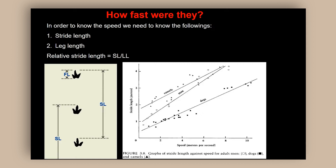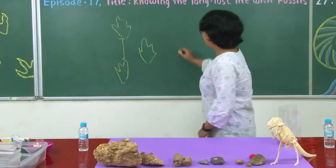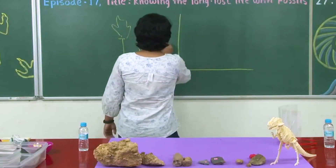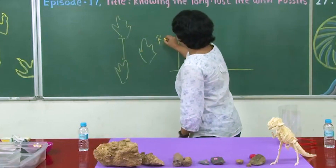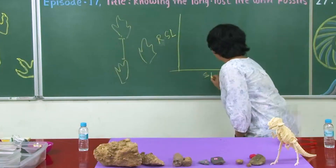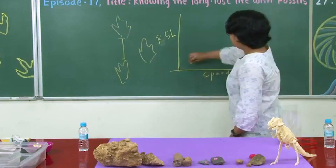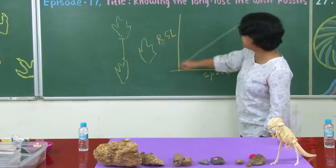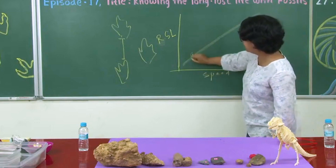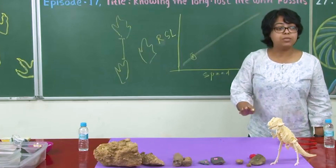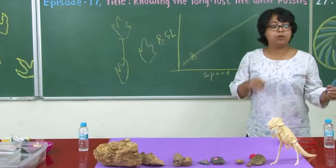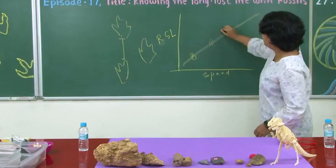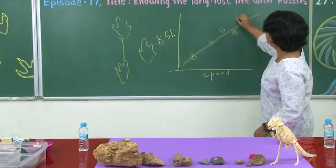If we use the relative stride length and leg length, we can come up with a measure of relative speed. We measure the relative stride length and the actual speed every time an animal walks or runs, and there is a general linear relationship. By looking at animals living today — some that only run, some that run intermittently, and some that walk very slowly — we can plot all of them and draw a line through the data.